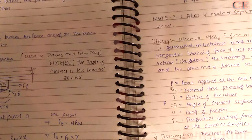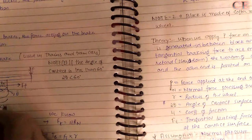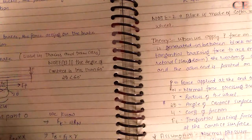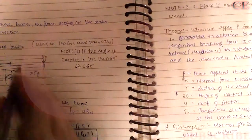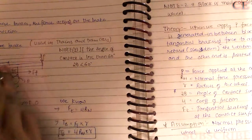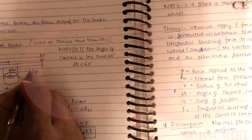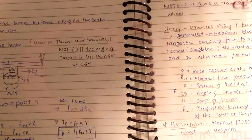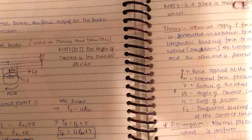In this case, the vehicle wheel is rotating in the anti-clockwise direction. When we apply force P, a normal reaction Rn is developed, and Ft is the tangential friction force generated at the contact surface.